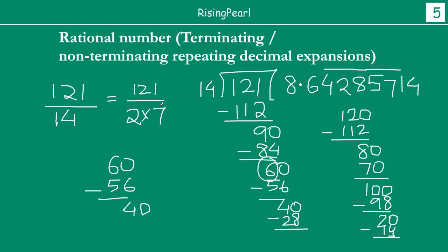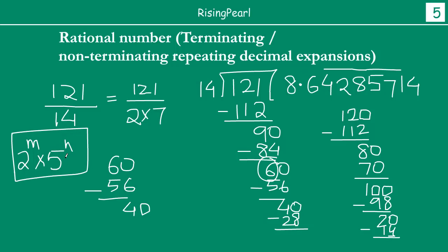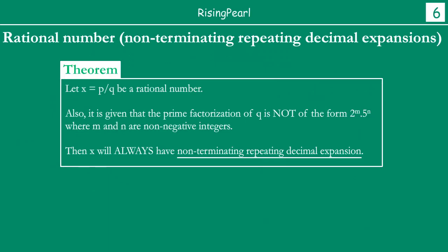So we are again noticing that when we take a denominator q which is not of the form 2 to the power m times 5 to the power n, we get non-terminating but repeating decimal numbers. This is indeed the third and final theorem about rational numbers: if x equals p by q is a rational number, and the prime factorization of q is not of the form 2^m times 5^n, then x will always have non-terminating repeating decimal expansion.